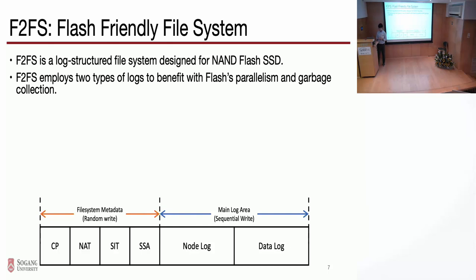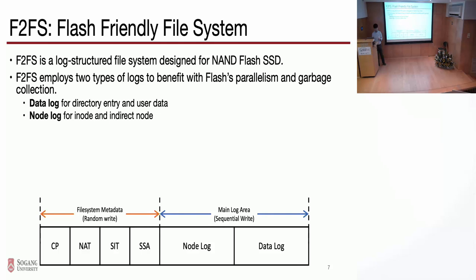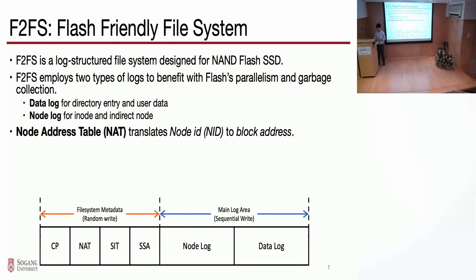F2FS employs two types of logs to benefit flash parallelism and garbage collection. The first log is the data log, which stores directory entries and user data. The second log is the node log, which stores the inode and indirect node. In F2FS, they manage the node log entry — basically the inode — using the NID. The NID is translated to the block address using the NAT (Node Address Table) to locate the physical location of that inode.